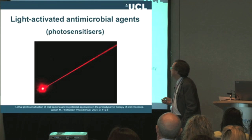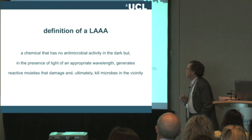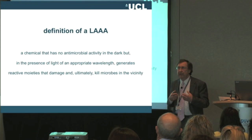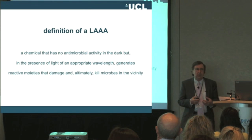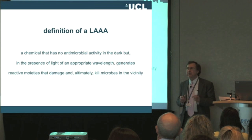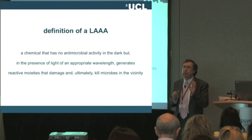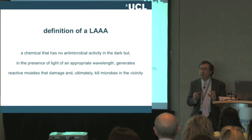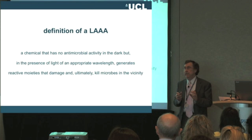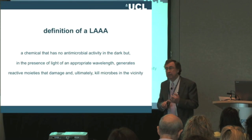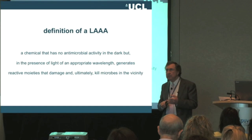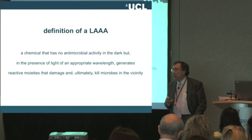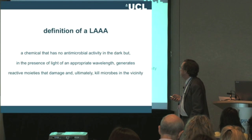So what is a light-activated antimicrobial agent? This is a chemical that has no antibacterial or antimicrobial activity in the dark, but when you irradiate it with light of a specific wavelength, it will activate that molecule so that it produces chemical moieties which can kill bacteria. These chemical moieties include reactive oxygen species such as singlet oxygen, hydroxyl radicals, and a wide variety of other organic radicals.